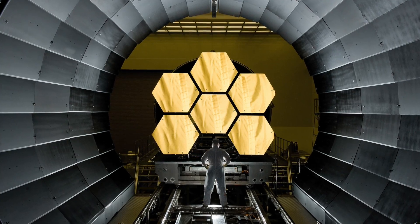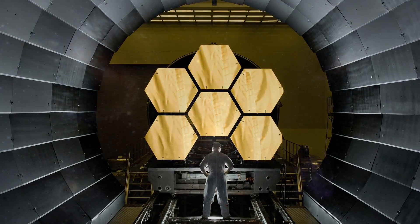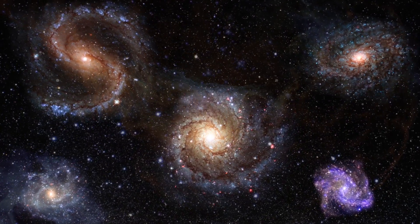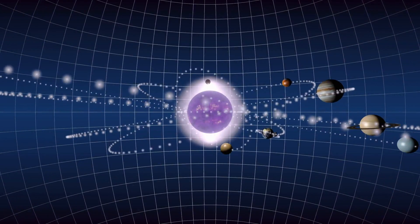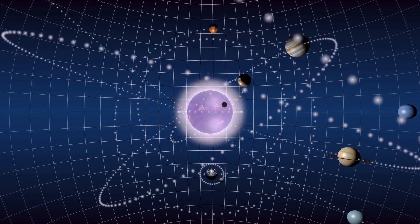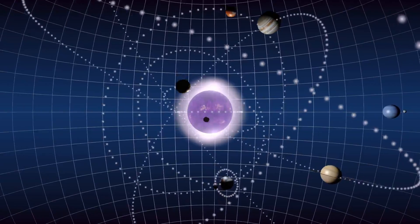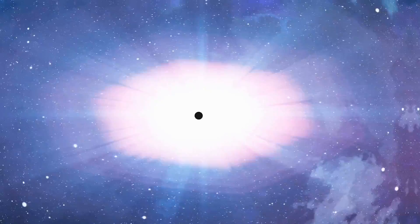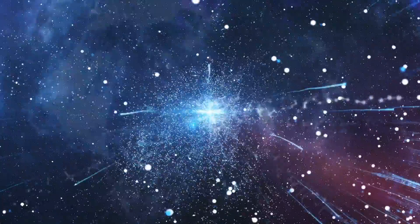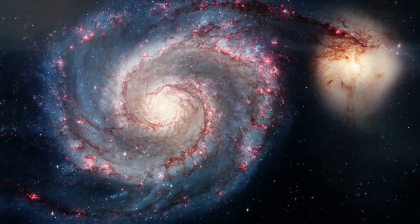The James Webb Space Telescope has four key goals. The first goal is to search for light from the first stars and galaxies that formed in the universe after the Big Bang. The second goal is to study galaxy formation and evolution. The third goal of the James Webb telescope is to understand star formation and planet formation. And the fourth goal is to study planetary systems and the origin of life.